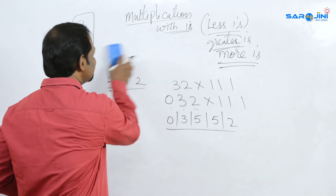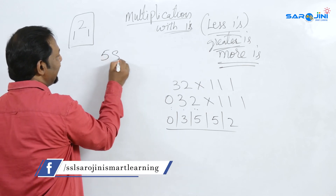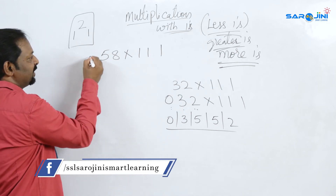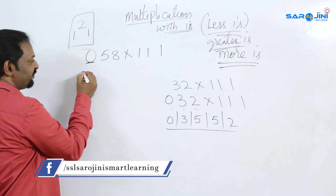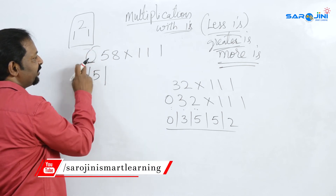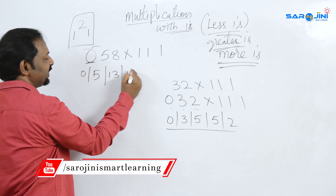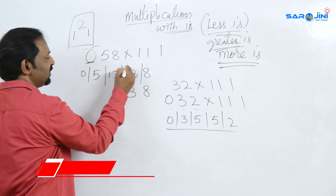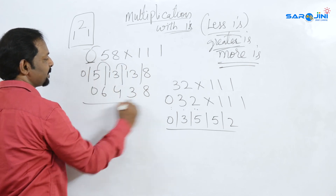So here, 58 is multiplied by 111. First digit, first and second: 5. First, second and third: 13. Last two: 13. And last one: 8. So 8, 3 — carry gives 4 and 6.